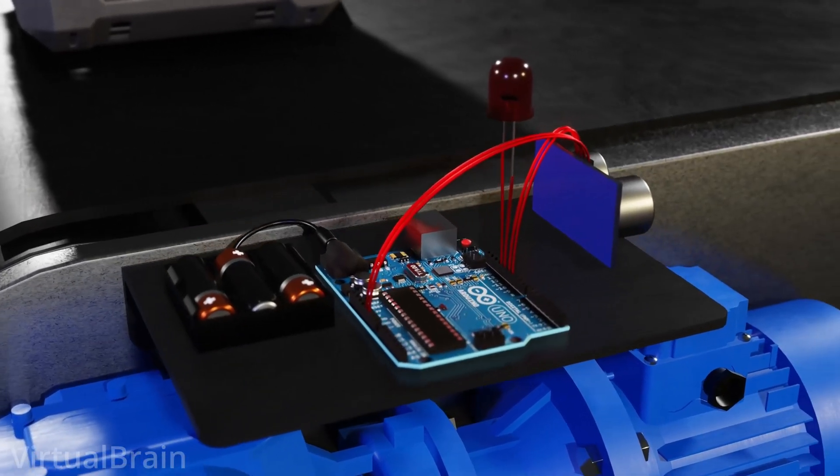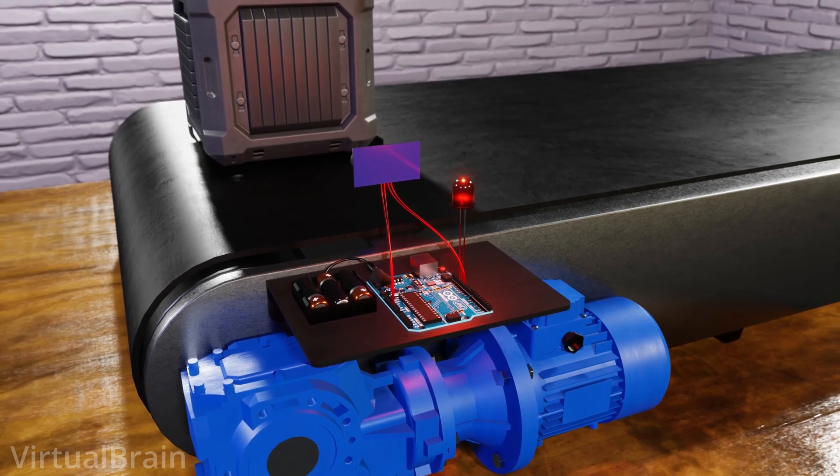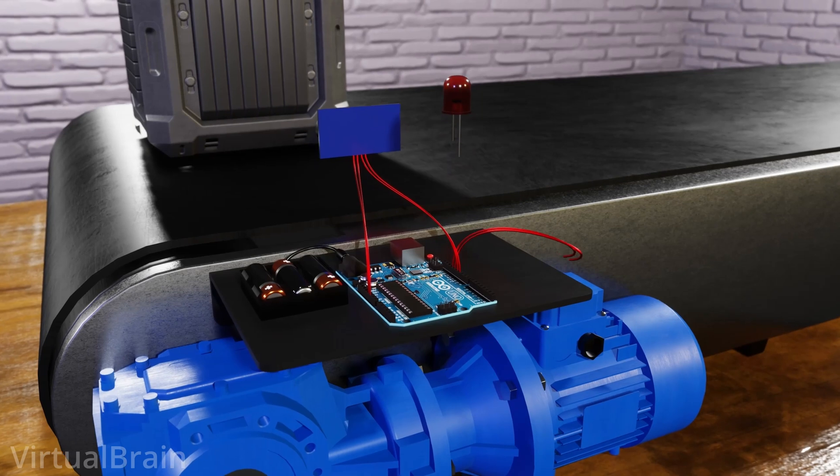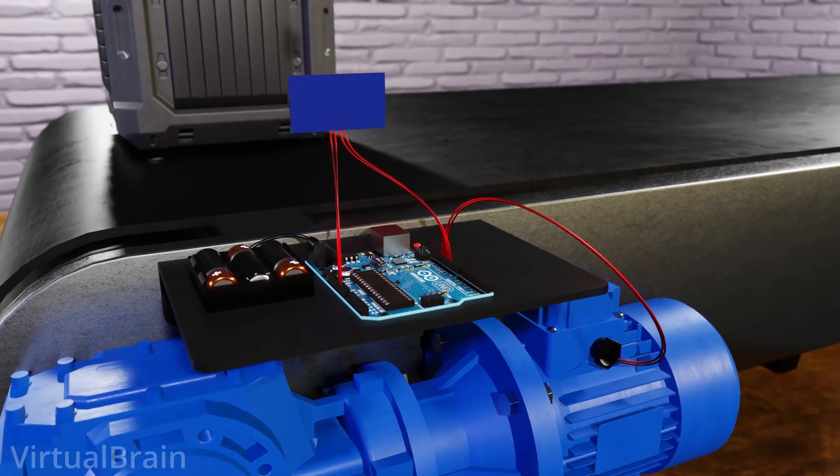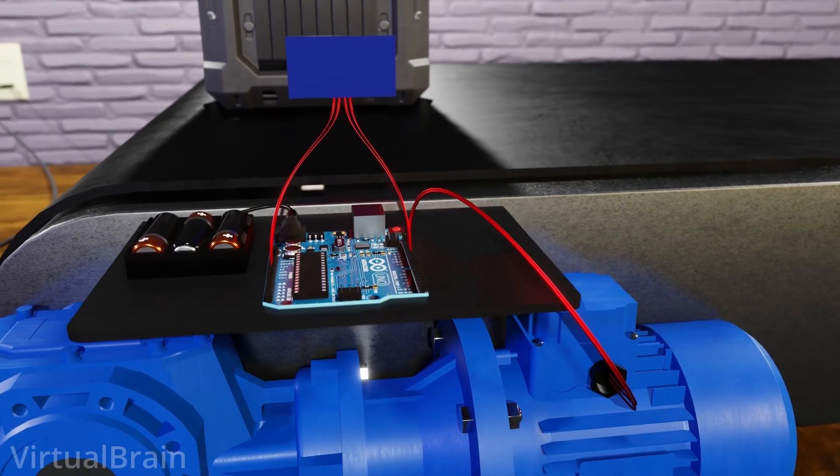For example, we could use this same circuit to activate a conveyor belt instead of just turning on an LED. In this case, one might think that it is just a matter of changing the wires that previously powered the LED and connecting them to a motor. However, if we did this, nothing would happen.